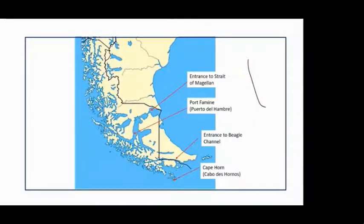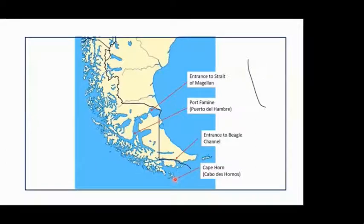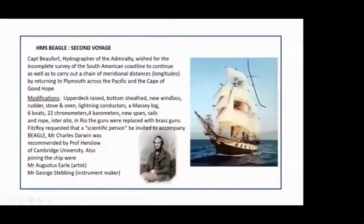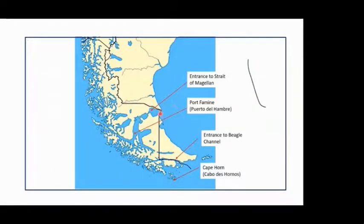Just to orientate ourselves geographically: the Strait of Magellan runs through here, and the Beagle Channel is in the south. Cape Horn, or Cabo de Hornos, is way down here. Port Famine, where the unfortunate predecessor of Captain Fitzroy committed suicide, is over there. This black line is the border between Argentina and Chile — this area is part of Argentina, and this area over here is Chile.